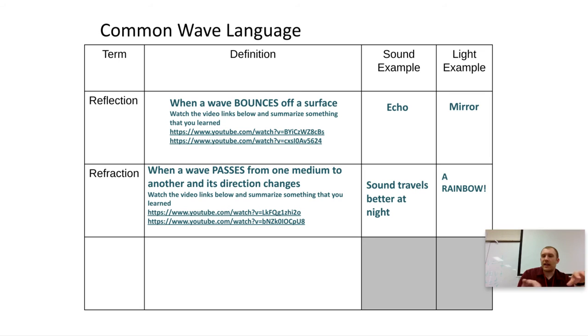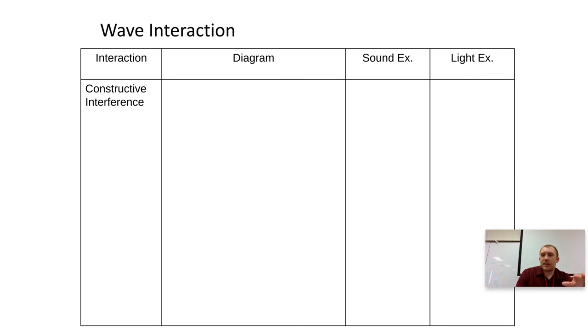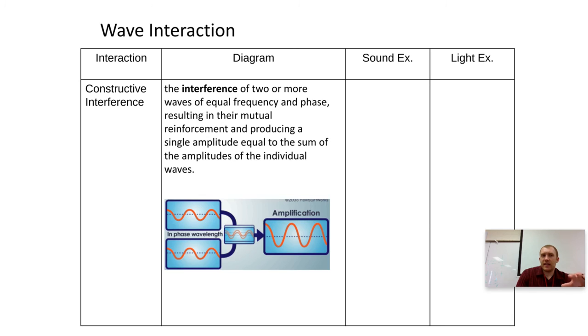And then a rainbow happens when it refracts off of water. We watched an Ed Puzzle video about why the sky is blue - that's refraction. Then waves can interact with each other, so they can interfere. They can either amplify.